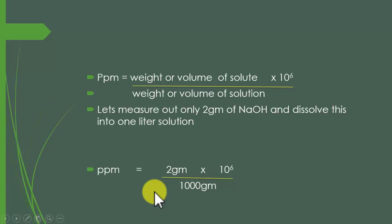So the ppm that comes out by the dissolution of 2 grams of NaOH into one liter solution is 2000ppm, and we are to prepare only 100ppm solution. So what we would do is dilute this using the dilution formula.